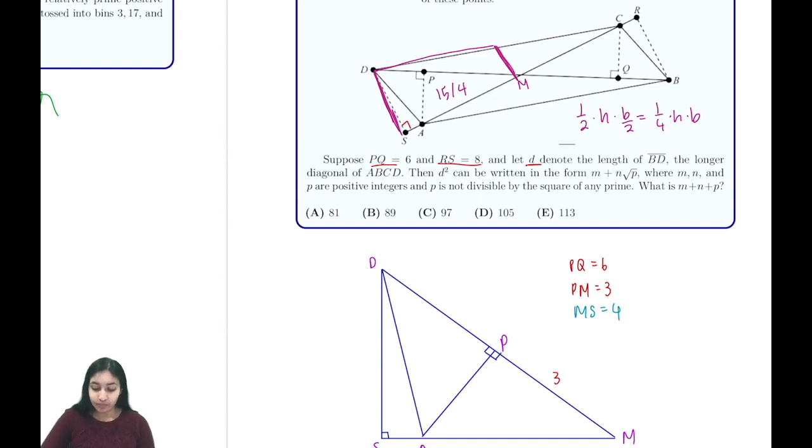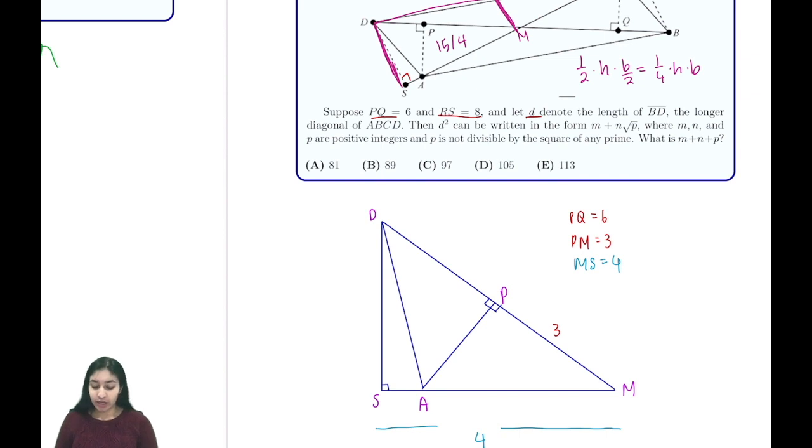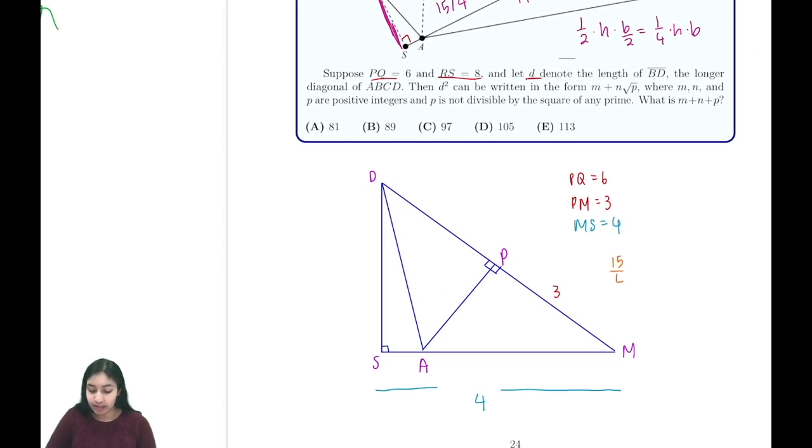We can also write 15 over 4 as AM times our height DS over 2. Let's let DM be some length x. From there, DS is going to be the square root of x squared minus 16, using the Pythagorean theorem. So 15 over 4 equals AM times the square root of x squared minus 16 over 2, which gives us AM equals 15 over 2 times the square root of x squared minus 16.